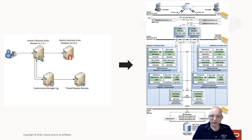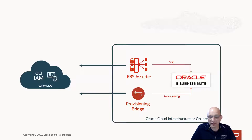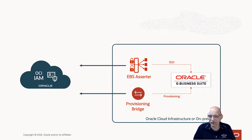Some customers may already have that deployed. Some might not, and they want to understand the approach using OCI's IAM — do they still need to deploy Oracle Access Manager and Oracle Directory Services? The answer is no, you don't. In fact, if you already have Identity Access Management Suite deployed, then you must unpick and deconfigure that integration in order to use the OCI IAM approach using the Assertor and the Provisioning Bridge.